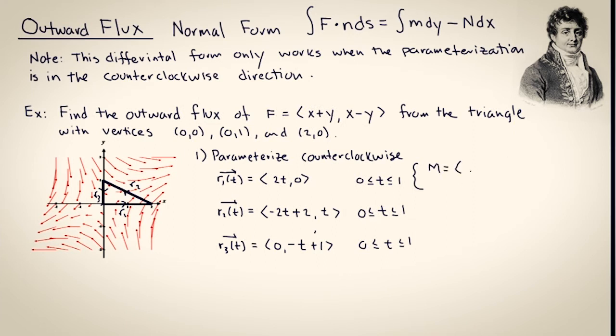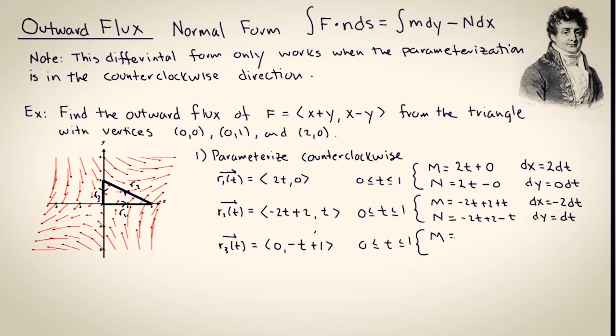Now I'm pushing the symbols around to set up the differential form m dy minus n dx. So I need to change all of the components of the vector valued function into t, and all of the differentials dy and dx into differentials in terms of t and dt.